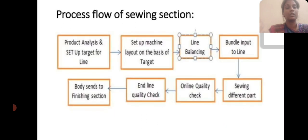Process flowchart of sewing section: product analysing and set up target for line; set up machine layout on the basis of target; line balancing; bundle input to line; sewing different parts; online quality check; end-line quality check; body sent to finish section.